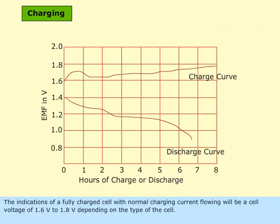The indications of a fully charged cell with normal charging current flowing will be a cell voltage of 1.6 volts to 1.8 volts depending on the type of the cell.